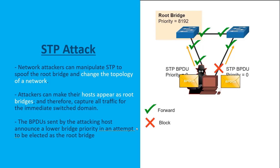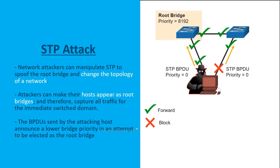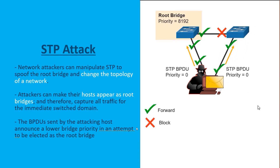To do this, they would be sending out Bridge Protocol Data Units, which are Spanning Tree layer 2 messages. These messages will include a priority of something insanely low, such as 0. By sending out these Spanning Tree messages saying that their priority is insanely good, the network infrastructure will view that threat actor's host — which is pretending to be a switch — as the root bridge, and they will all find the best way to reach it, dropping their main connections and routing through that threat actor's switch. This allows the threat actor machine to act as a man-in-the-middle and see all network traffic moving across the network domain.